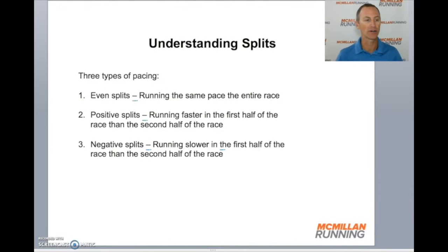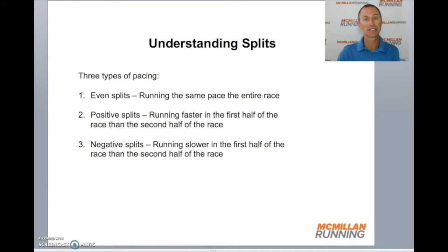Now let's look at the different types of splits that athletes talk about. There are really three types. The first is even splits — where you run the same pace for the entire race. The second is a positive split — where you run faster in the first half and slower in the second half. The third type is a negative split — where you run slower in the first half and faster in the second half.